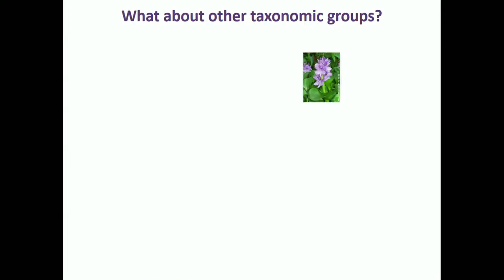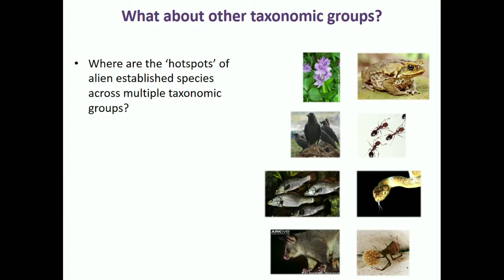That's the picture for plants, but what about other taxonomic groups — vertebrate species that are intentionally introduced, or invertebrates that are unintentionally introduced? What I've been working on is trying to work out, across multiple taxonomic groups, which parts of the world are hotspots for alien-established species.